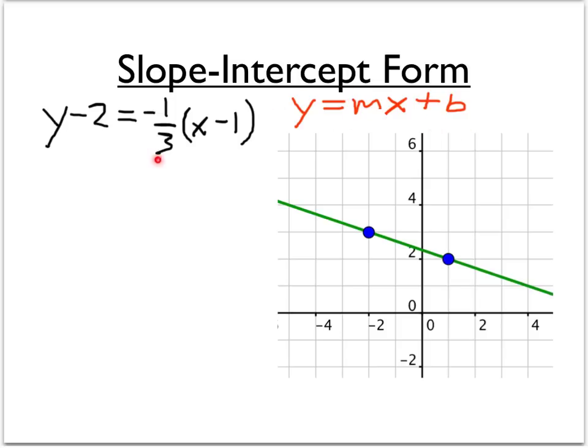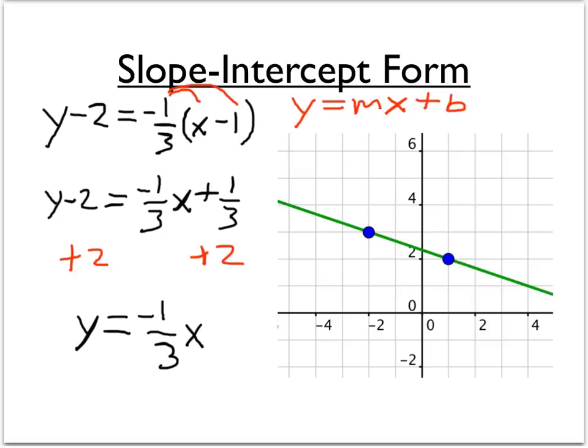So to start off, let's use the distributive property on negative 1 third times the quantity x minus 1. So negative 1 third times x is just negative 1 third x. And then negative 1 third times negative 1, we're going to add plus 1 third. And that still equals y minus 2. And now we'll add 2 to both sides in order to isolate y by itself. So we're left with y equals negative 1 third x plus 2 and 1 third. And so now we have our equation in slope-intercept form.